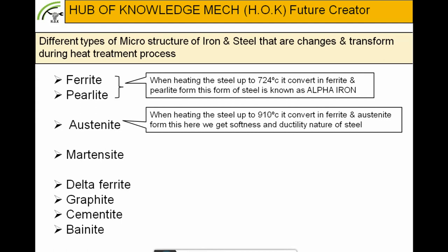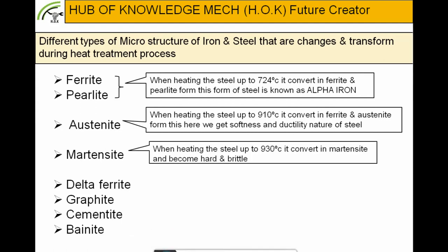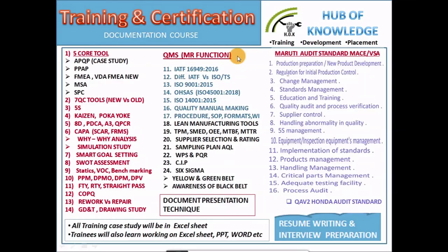Martensite: when heating steel up to 930°C, it converts to martensite and becomes hard and brittle. So to reduce excess hardness and create ductility, the tempering process is required. Friends, if you join our complete advanced training course as shown in the template, then job guarantee is 100% after completion of the training course. Any interested candidates can contact on the number given on screen.